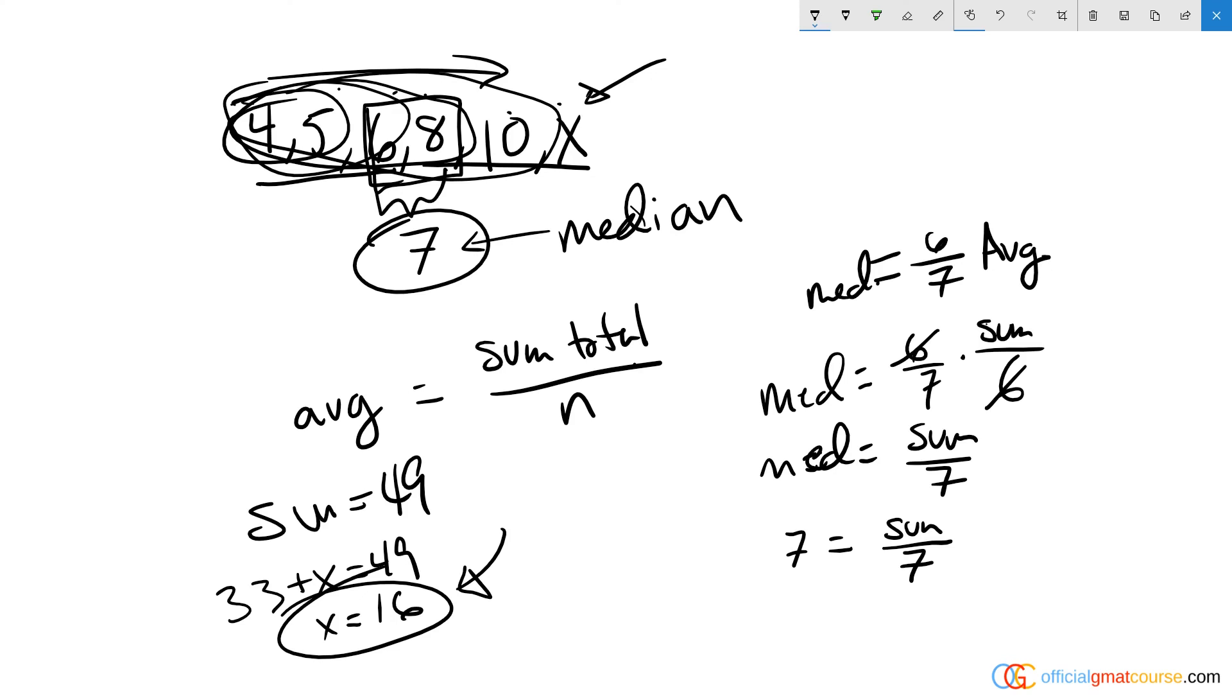So whenever you have an average question, think about how many items am I dealing with, how many numbers are there, and the average is simply the total sum of all those numbers added together divided by the number of those items. It's always a lot easier to focus on the sum total than it is to manipulate the average.